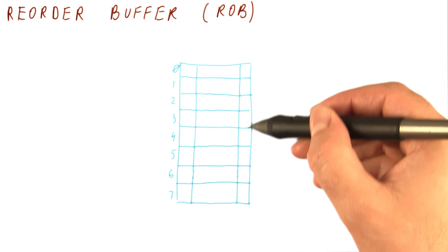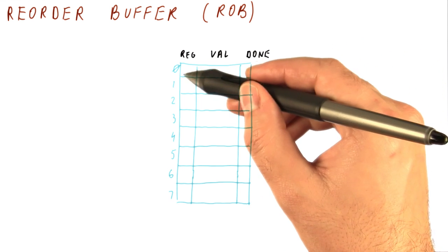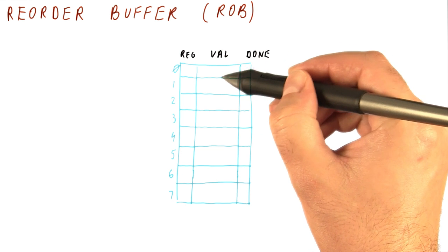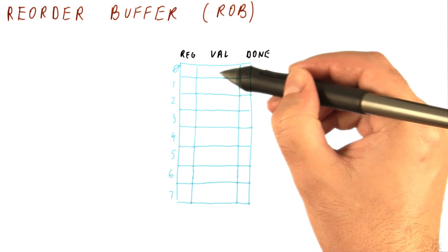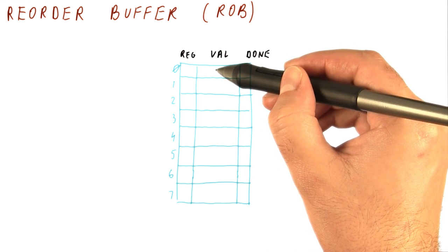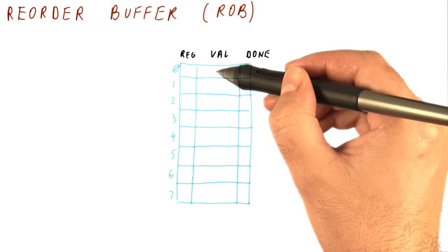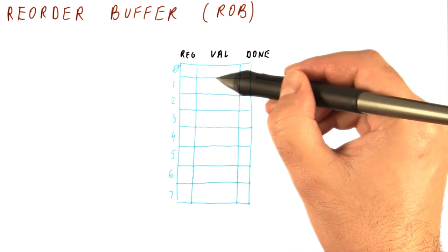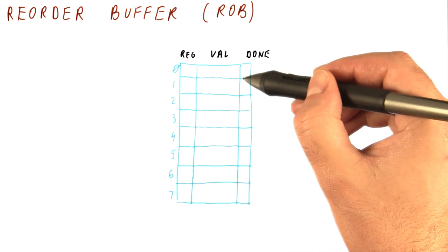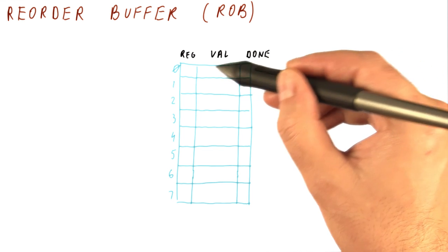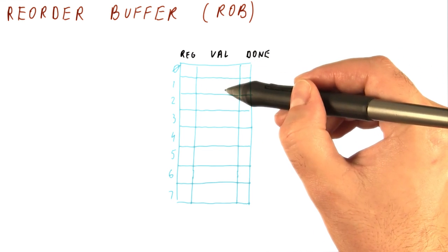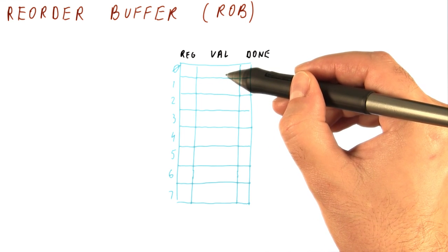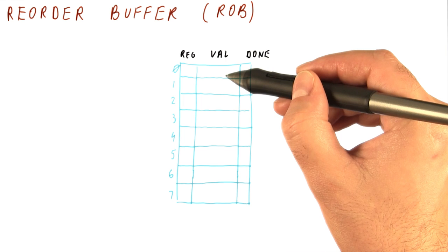The reorder buffer is a table of entries. In each entry, we keep at least three fields. One says what the value produced by the instruction is. This is the value that we are not writing to the register. When the instruction finishes, it will now write its value to the reorder buffer when it broadcasts. We need a bit here to tell us whether we actually have a valid value here or not, because we will give a reorder buffer entry to the instruction before it actually writes the result.